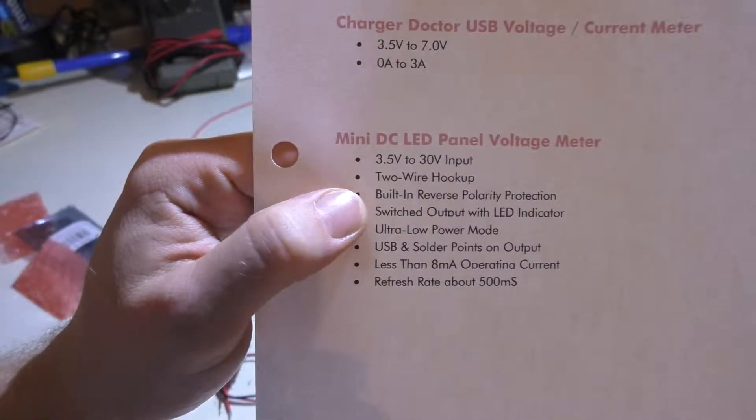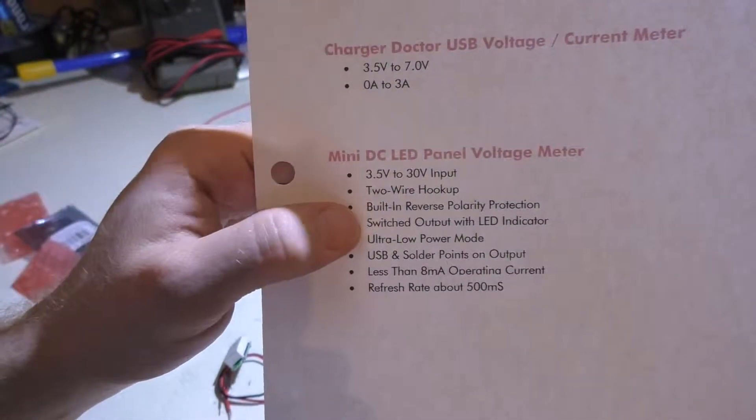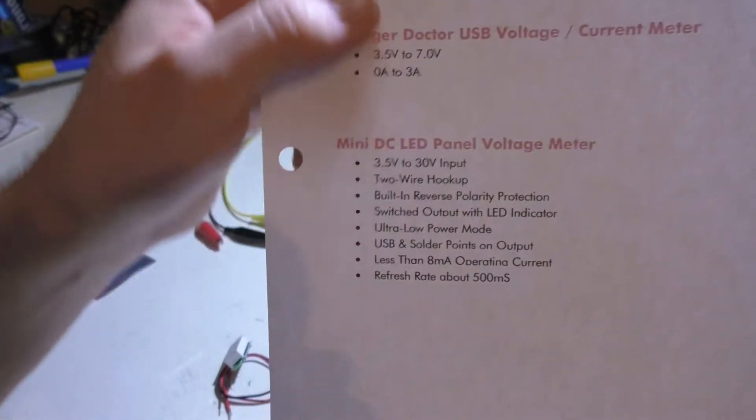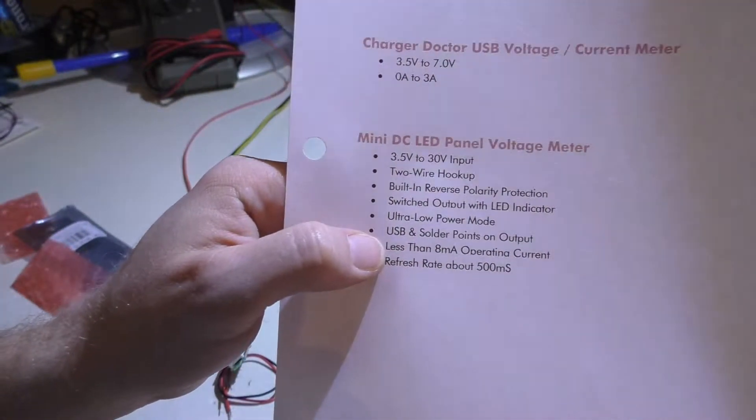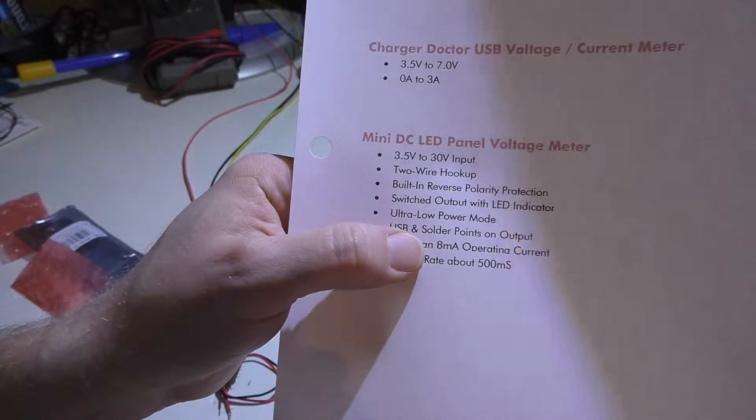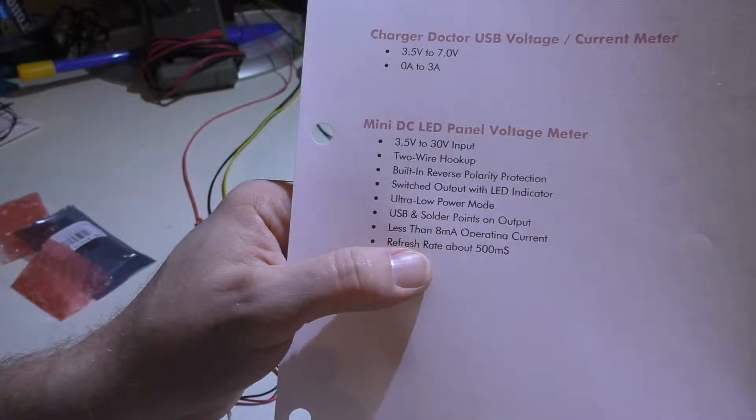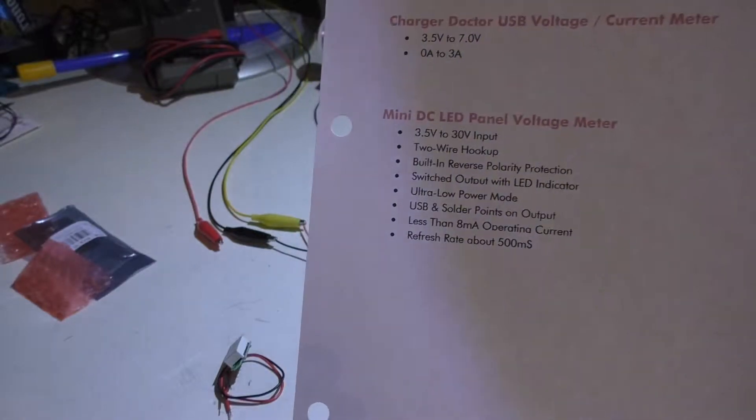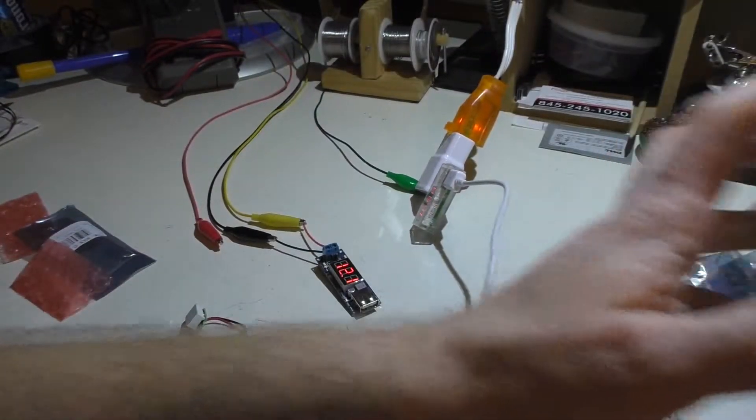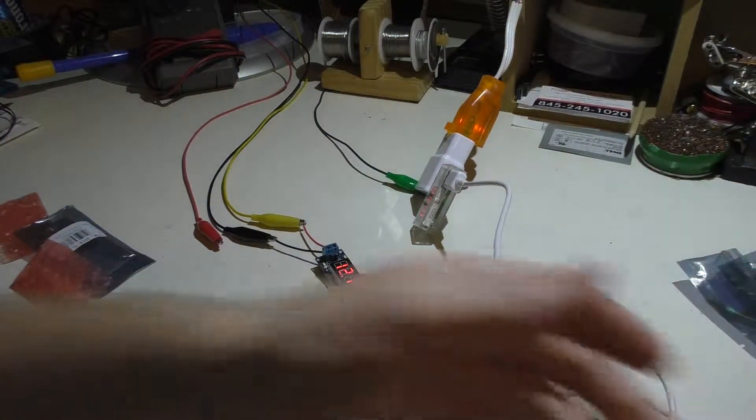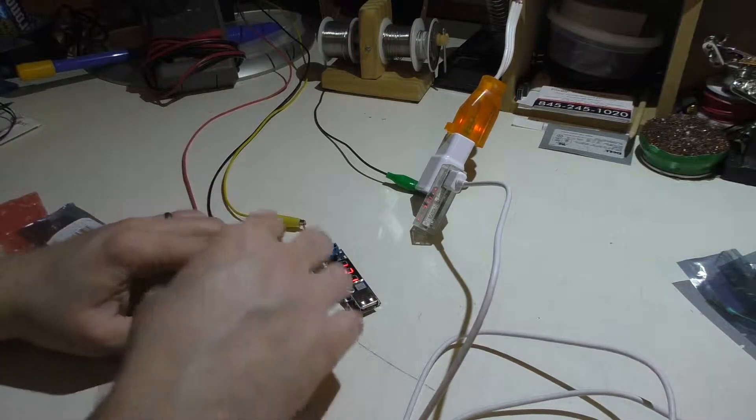But we can see here, it also has the reverse polarity protection. The switched output LED indicator. Sorry, that belonged with up top. I did copy and paste some of these. Yeah, it is less than 8 milliamp output current. And yeah, the refresh rate's pretty fast in this. Yeah, it doesn't have a low power mode. You can scratch those off the list. Tried to make the specs easy, but I'll put them in the description as well.